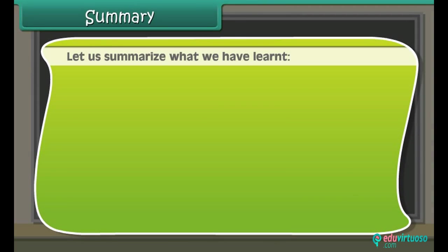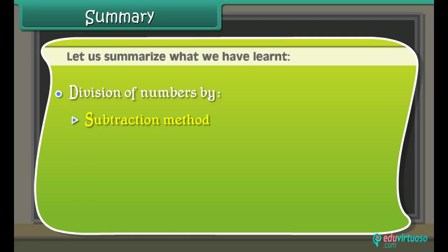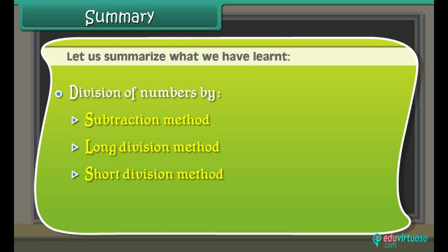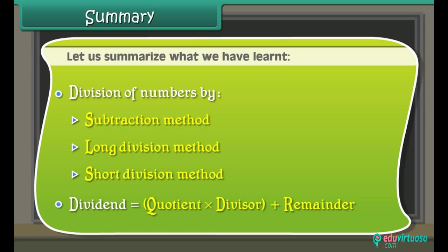Let us summarize what we have learned: division of numbers by subtraction method, long division method, short division method. The dividend is equal to the quotient multiplied by the divisor plus the remainder.